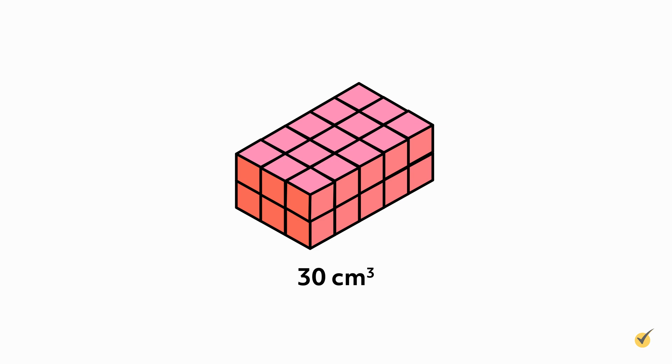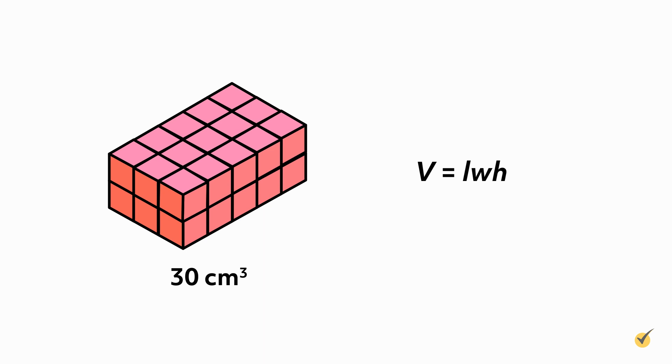Notice that if we multiply the dimensions of our 5 by 3 by 2 cube, we get our volume. That's because the formula for volume of a rectangular prism is the product of the dimensions. Volume is equal to length times width times height. So in this case, our volume V is equal to 5 times 3 times 2, which equals 30.